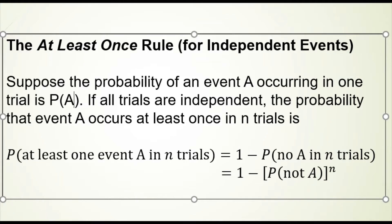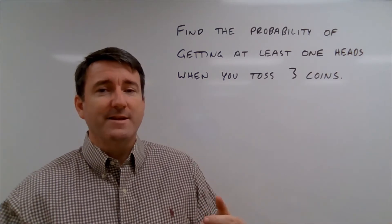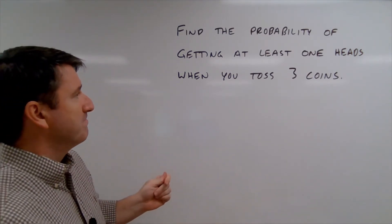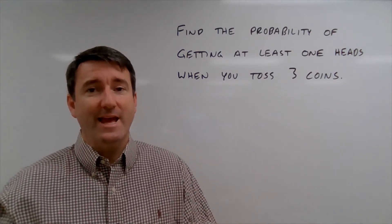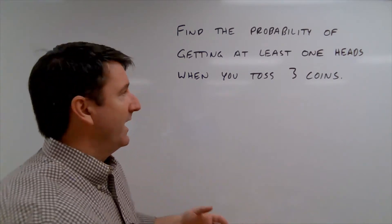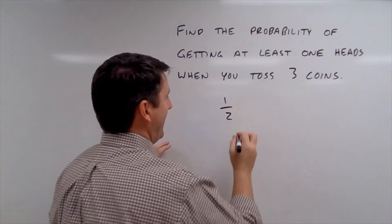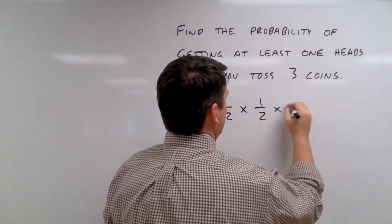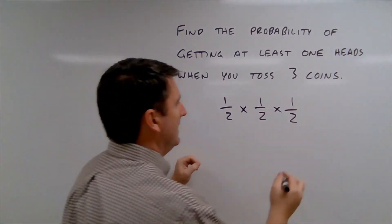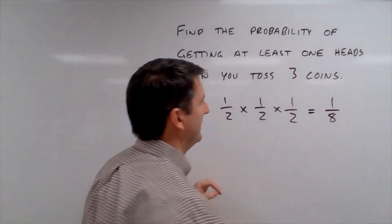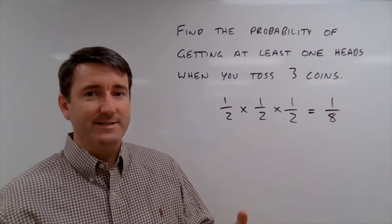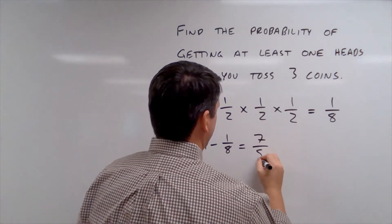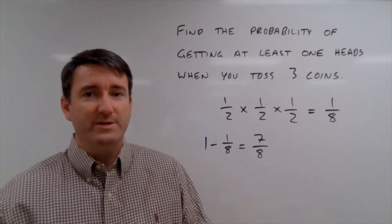We'll be able to see this a little better in a few examples. Our first example asks us to find the probability of getting at least one heads when we toss three coins. The first thing we need to do is find the probability of not getting any heads at all — in other words, the probability of getting three tails in a row. That probability is one half times one half times one half, so we're flipping the coin three times, and altogether that's one eighth. So the probability of getting at least one heads is one minus one eighth, which is seven eighths.